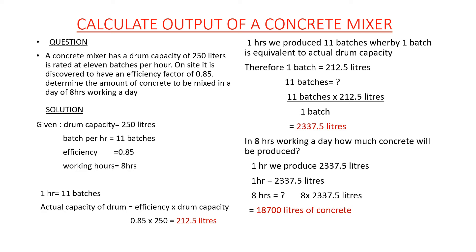In this question we have a concrete mixer with a drum capacity of 250 liters, rated at 11 batches per hour. On site it is discovered to have an efficiency factor of 0.85. We need to determine the amount of concrete to be mixed in a day of eight working hours. So: drum capacity is 250 liters, number of batches per hour is 11, efficiency is 0.85, and working hours is eight hours.